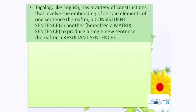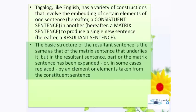Tagalog, like English, has a variety of constructions that involve the embedding of certain elements of one sentence, hereafter a constituent sentence, in another, hereafter a matrix sentence, to produce a single new sentence, hereafter a resultant sentence. The basic structure of the resultant sentence is the same as that of the matrix sentence that underlies it, but in the resultant sentence, part of the matrix sentence has been expanded, or in some cases replaced by an element or elements taken from the constituent sentence.